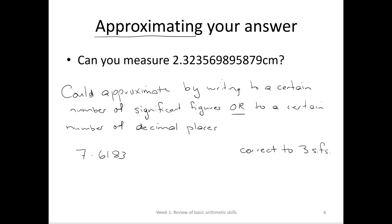What we're doing is approximating. Let's look at 7.6183 and say we want to approximate correct to three significant figures — you might write that as SF. Three significant figures means three figures wherever they are. So we go 1, 2, 3, and look at the fourth one. The fourth one is more than 5, so we can round up. So 7.6183 is approximately equal to 7.62, correct to three significant figures.